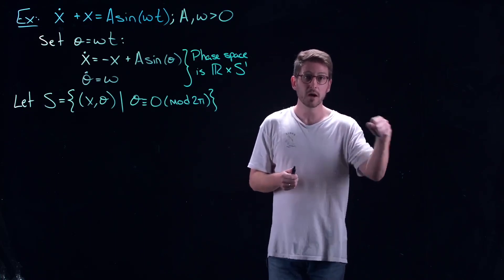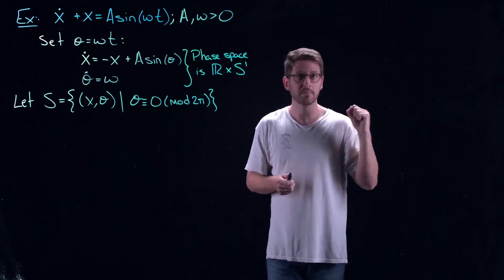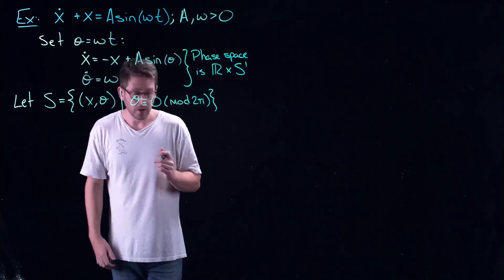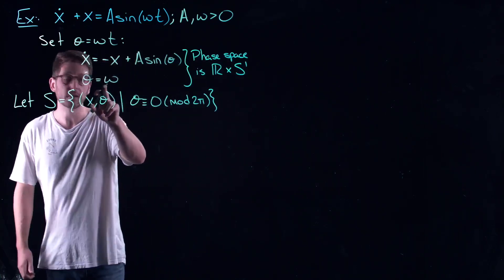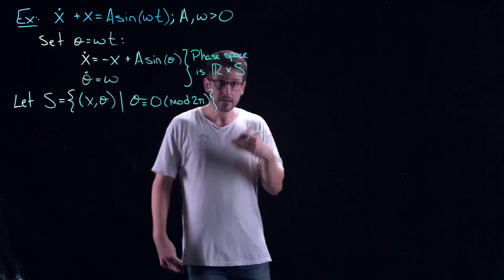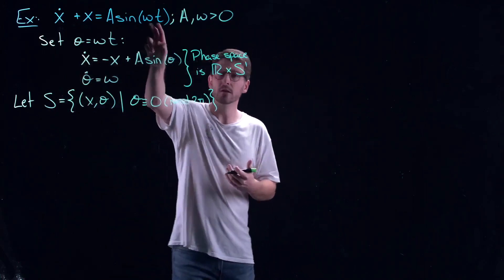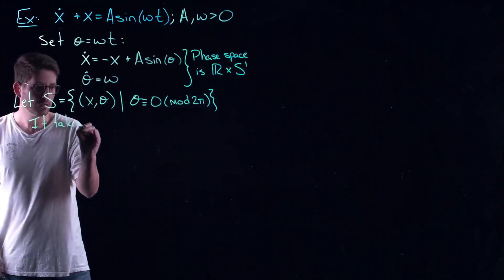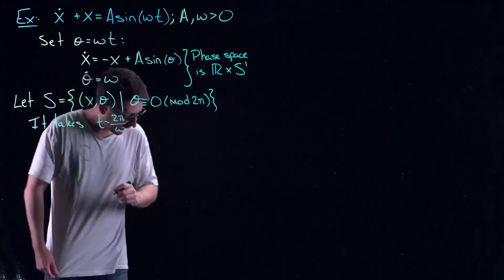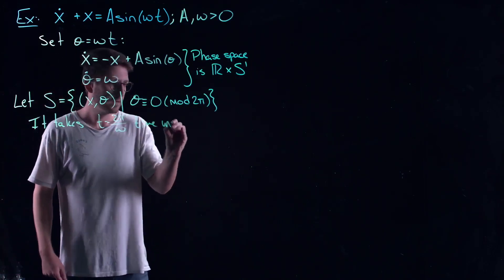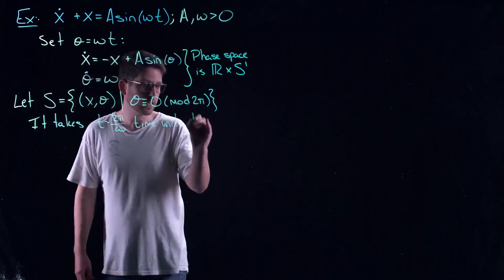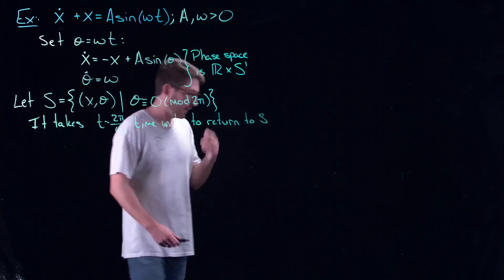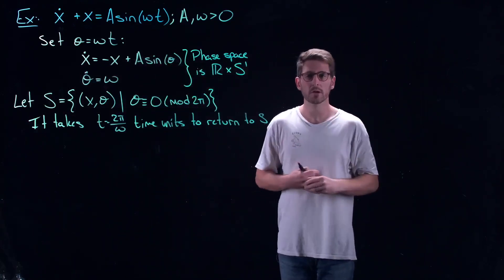I'm falling asleep and someone's punching me in the arm periodically — take a picture every time the punch lands. It's a silly analogy but a nice way to think about it. Again, we have a very simple way of figuring out how long it takes to get through one section, because this thing has a period of 2π/ω, so it takes T = 2π/ω time units to return to S.